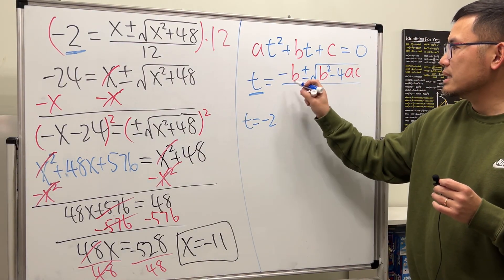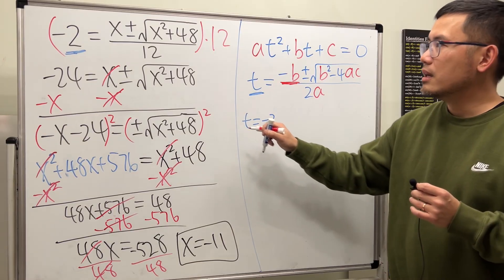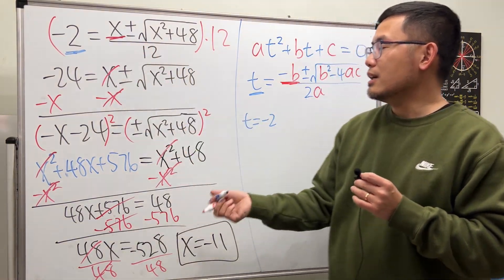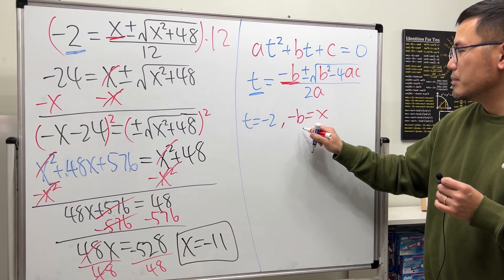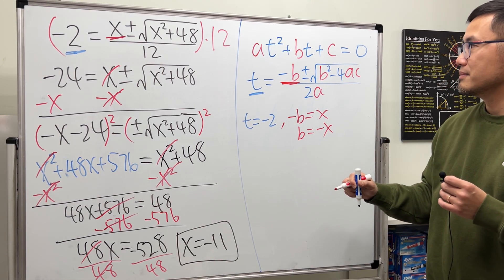Then, we see that this part, we have negative b, it has to match with x. So, negative b matches with x, that means b is equal to negative x. Okay?